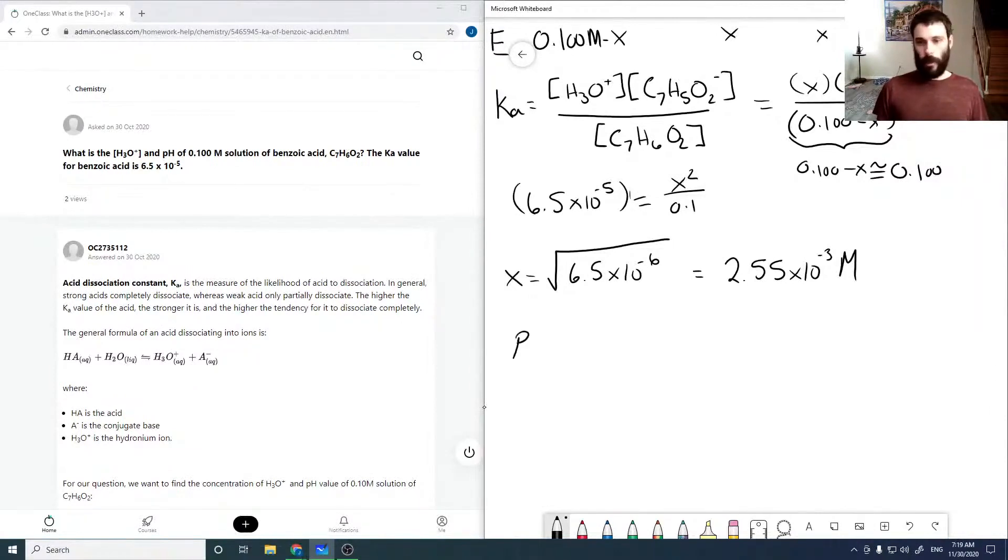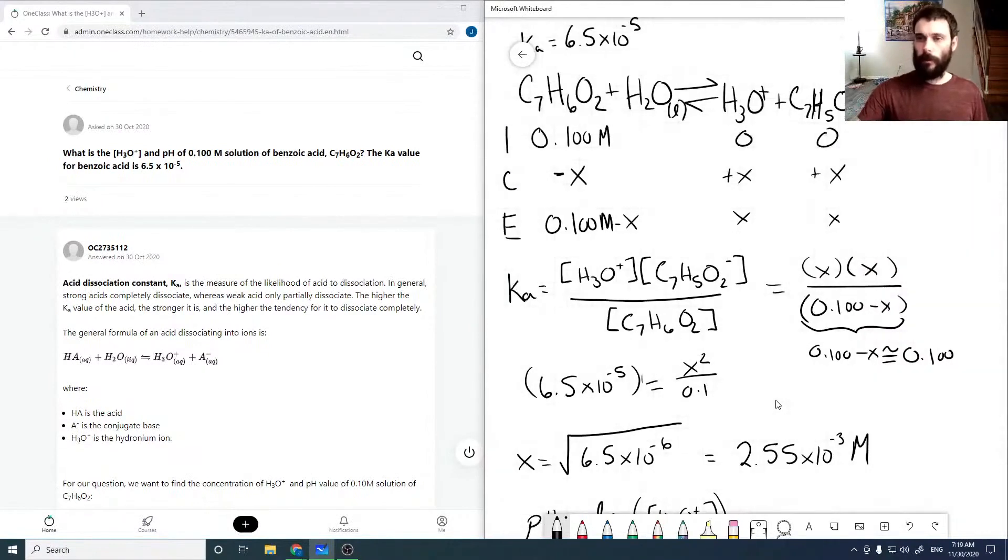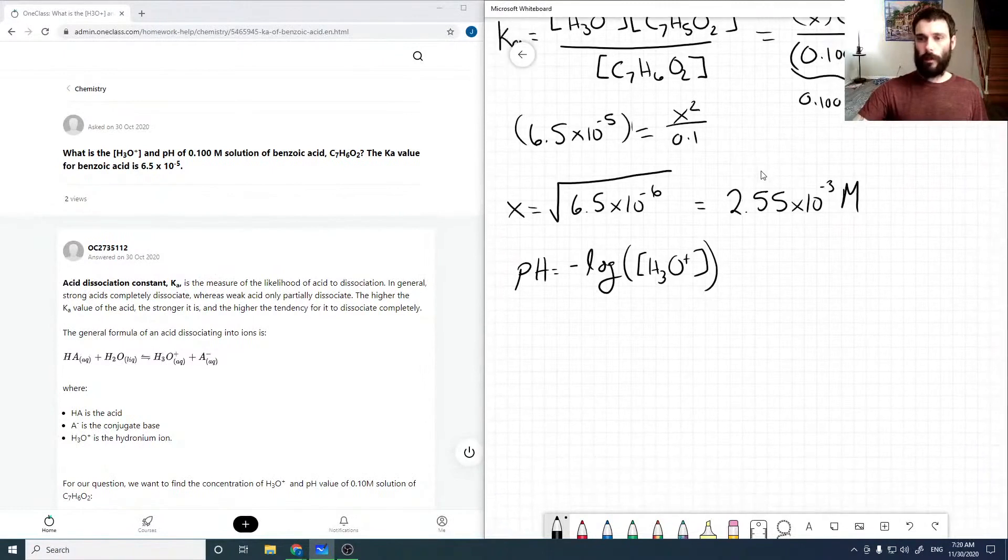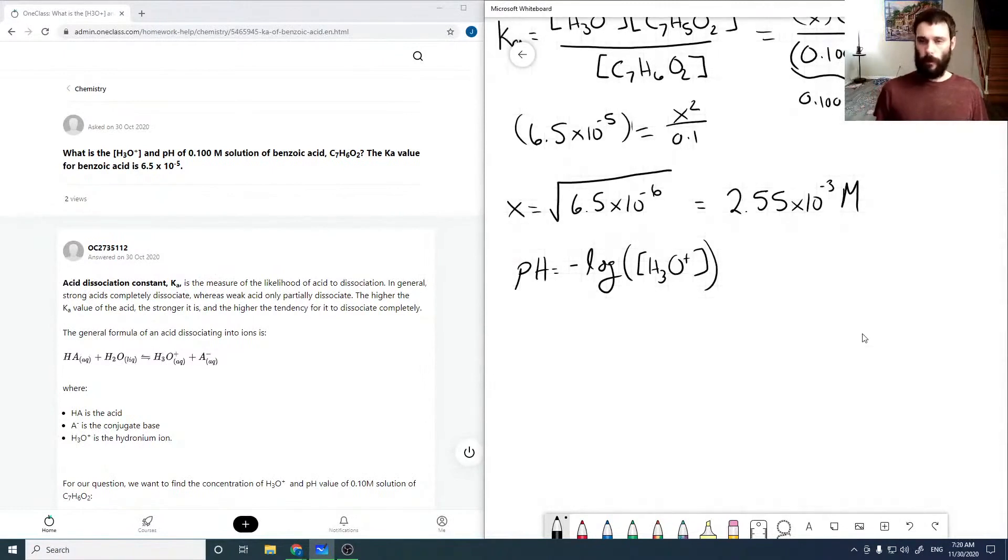And so our pH is the negative logarithm of our H3O plus concentration. Our X from our ICE table is our H3O plus concentration. So that means we are solving directly for our H3O plus concentration. And so our pH is the negative logarithm of 2.55 times 10 to the minus 3 molar, or 2.59.